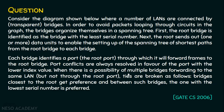Port conflicts are always resolved in favor of the port with the lower index value. When there is a possibility of multiple bridges forwarding to the same LAN but not through the root port, ties are broken as follows: bridges closest to the root get preference, and between such bridges, the one with the lowest serial number is preferred.